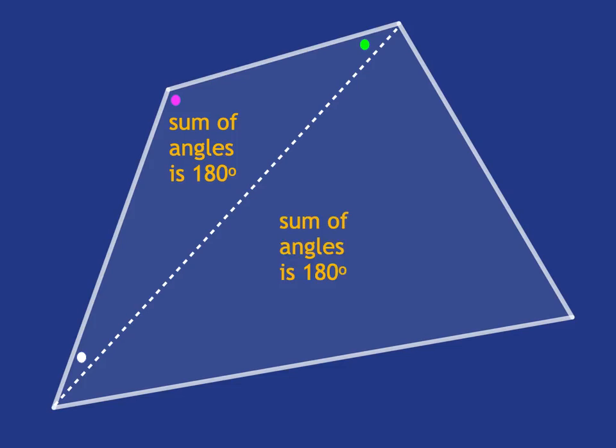And in the second triangle, the same story is true as well. And so now we can see that the sum of the angles of the quadrilateral is just the equivalent of two triangles. So it's two times 180, which is 360.